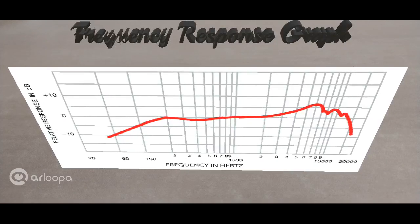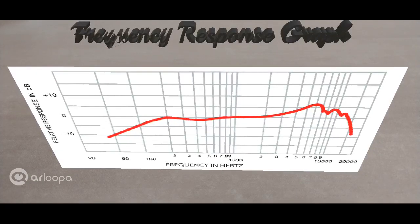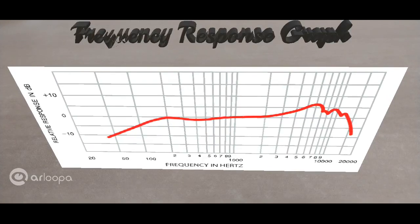Here's a frequency response graph for a given dynamic microphone. Keep in mind that this is not a generalized graph — the frequency response can be literally anything for any microphone; it can be tailor-made. But generally, as we observe for dynamic microphones, the frequency response graph is not completely flat; it has bumps and dips.